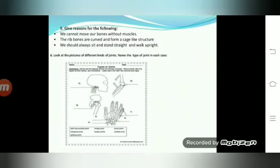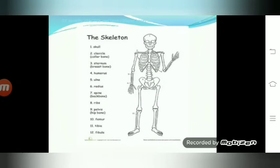Question number six: a picture is given here showing kinds of joints. You need to label and find out which particular type of joint is given in the picture. The next one is a picture of a skeleton — in this diagram you have to label and learn the names of the particular parts of the skeleton.